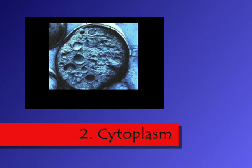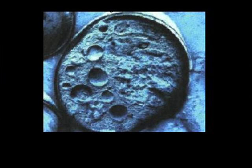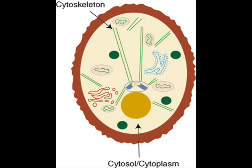Everything within the cell membrane which is not in the nucleus is known as the cytoplasm. Cytosol is a jelly-like mixture in which the other organelles are suspended. So: cytosol plus organelles equals cytoplasm.